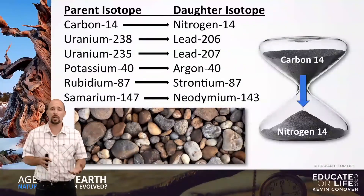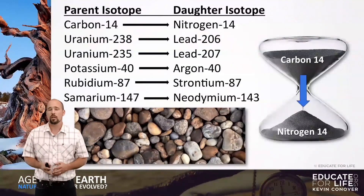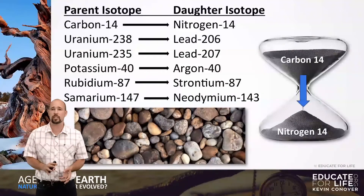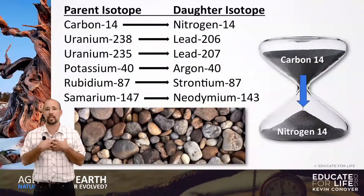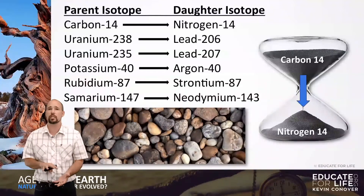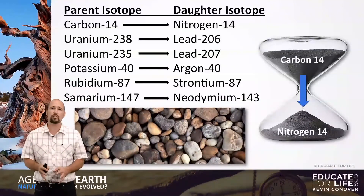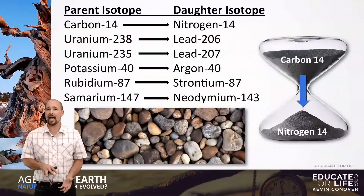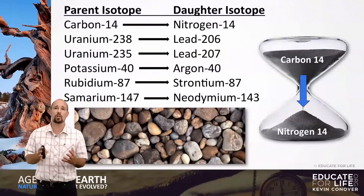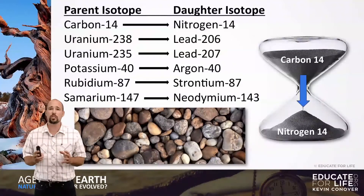Scientists will try to date different rocks and fossils using these different radioactive isotopes. With carbon-14, an animal takes in carbon-14 by eating grass. The grass has carbon-14 in it, which then goes into the animal. Over time animals keep taking in carbon-14, but when they die they stop. All the while the carbon-14 is changing into nitrogen-14, so a dead animal with a lot of nitrogen-14 has been dead longer than one with just a little. This is how they use radioactive dating.